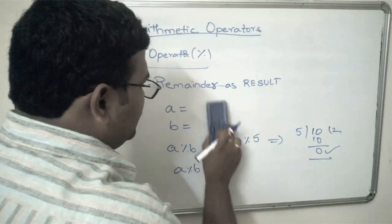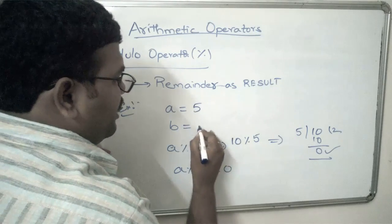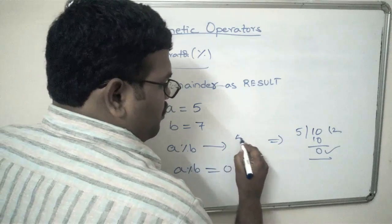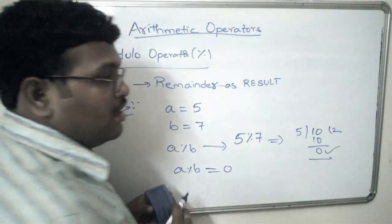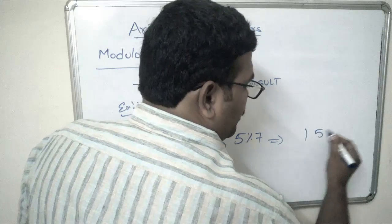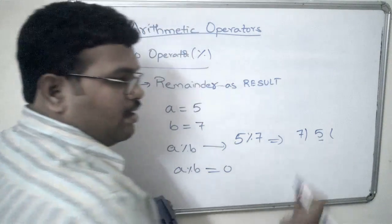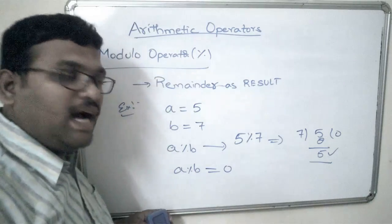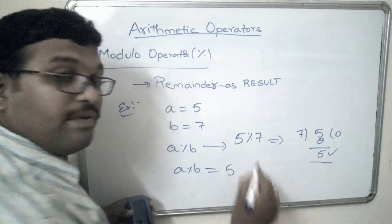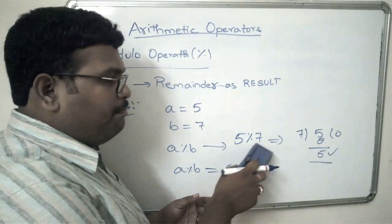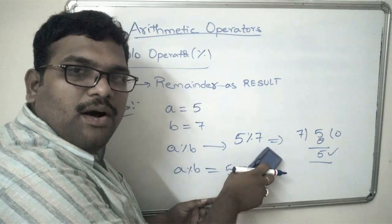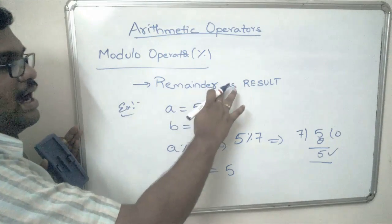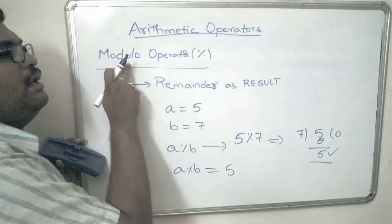One more example: let a equal 5 and b equal 7. Then a mod b means 5 mod 7. Here, 5 must be divided by 7, but 5 is less than 7, so zero times seven is zero and the remainder will be 5. The answer: a mod b equals 5. That means if a is less than b, the result of a mod b will be a itself. The main point is: after performing division, the remainder is the result of the modulo operator.